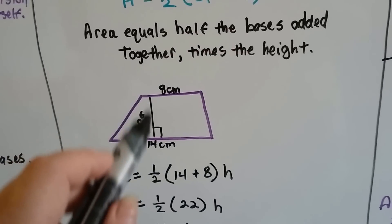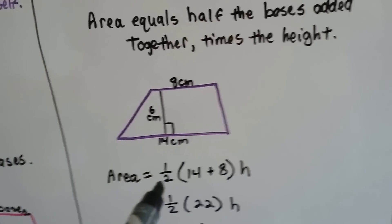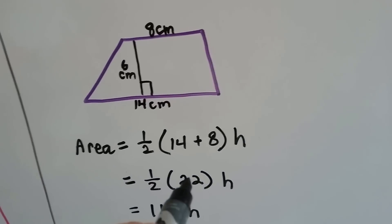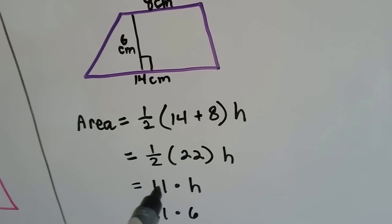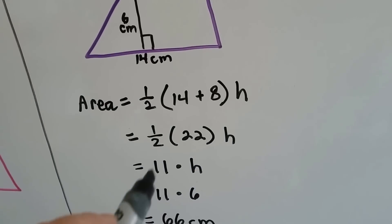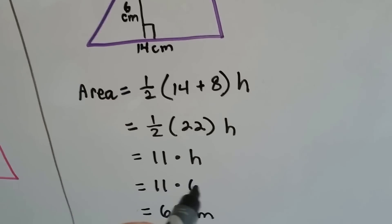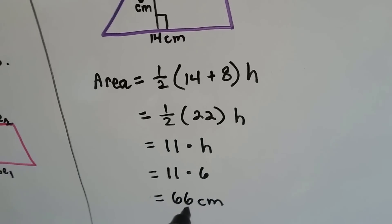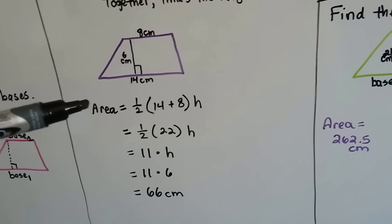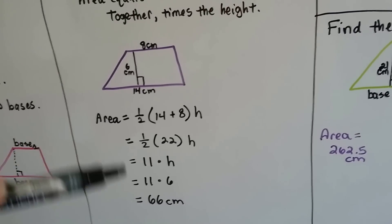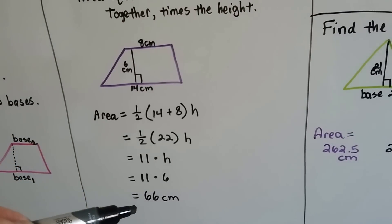If we've got a height of 6 centimeters and base 1 and base 2 are 8 and 14 centimeters, we add 14 and 8 to get 22, and multiply that by half. Half of 22 is 11. Since the height is 6, the area is 11 times 6. The area is 66 centimeters. You just take it each step, plug the information into the formula, and then work through it slowly.